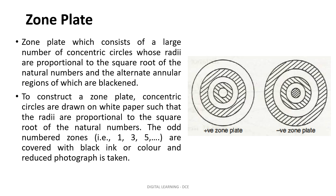If odd zones (1st, 3rd, 5th, ...) are blackened or made opaque and the even zones (2nd, 4th, 6th, ...) are made transparent, then such a zone plate is a negative zone plate. If the even zones are made opaque and odd zones are transparent, then it is called a positive zone plate. The radius of the zones should be taken as the square root of the natural number. Concentric circles are drawn on white paper with the proposed radii and a reduced photograph is taken. A zone plate is a diffraction screen in the form of a transparent glass plate such that light from every alternate zone is cut off.